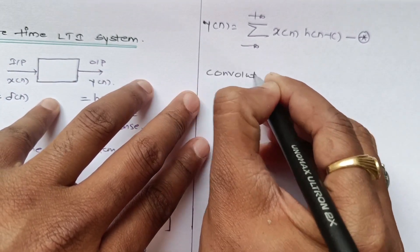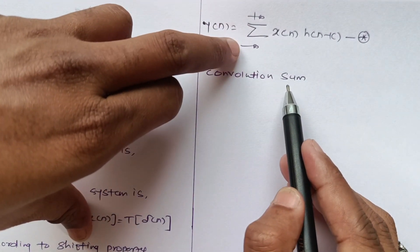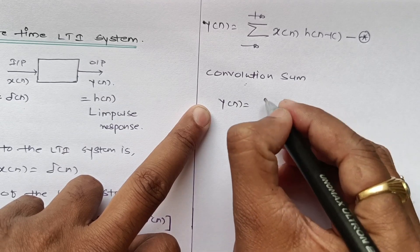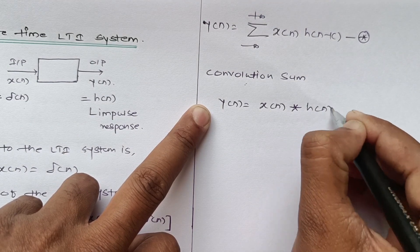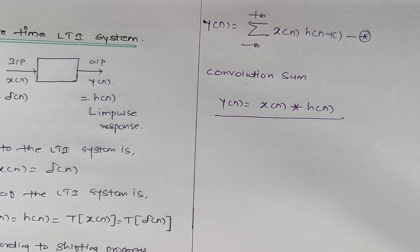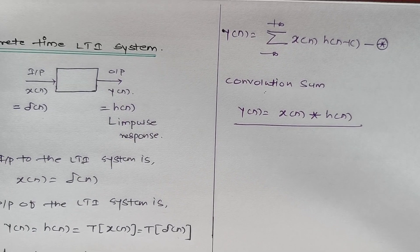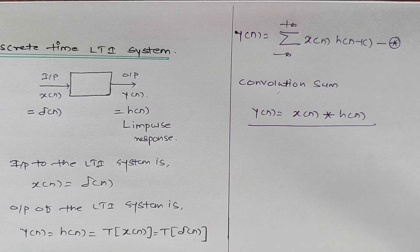This output expression is known as the convolution sum. We represent y of n as the convolution of the first function x of n with the second function h of n, using the convolution sign. This is the convolution formula for the discrete time LTI system. I hope you understood how to determine the expressions for discrete time LTI systems as well as continuous time LTI systems. Thank you.